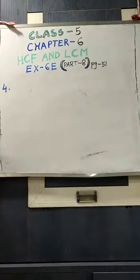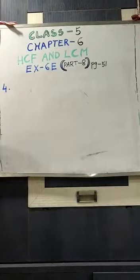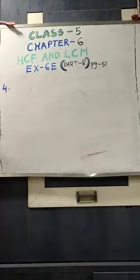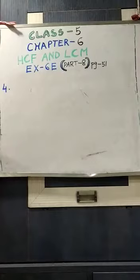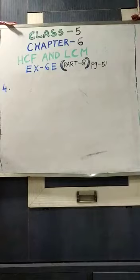Start with number 4. I am reading the sum, you look at the book. What is the smallest number of chairs that can be arranged in rows of 9 or 15? Smallest number of chairs — that means the number of chairs has to be a multiple of both 9 and 15. So to find out the smallest number of chairs that should be a multiple of 9 and 15, we have to do the LCM of 9 and 15.